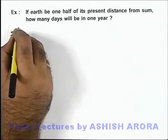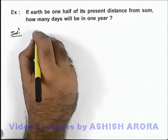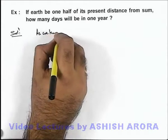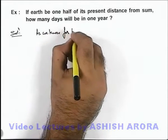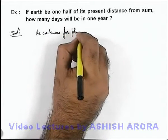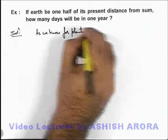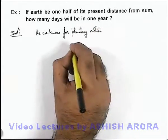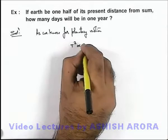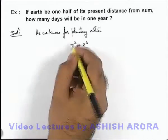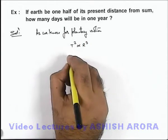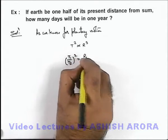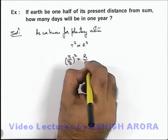So here we can directly write that, as we know for planetary motion, by using Kepler's 3rd law, T² is directly proportional to R³. And we can write (T1/T2)² is equal to (R1/R2)³.